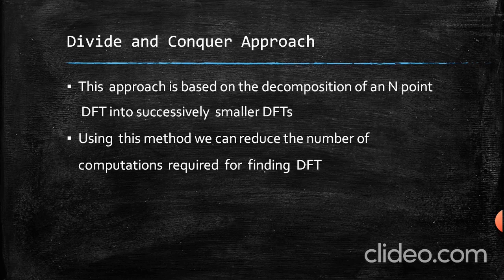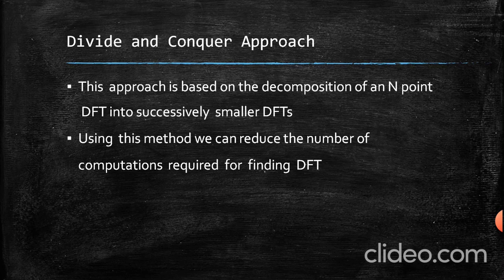For example, if the number of multiplications required for finding the DFT using the coefficient matrix method is around 1000, then using the divide and conquer approach it is less than 1000 — perhaps around 600 or 500, depending on the value of capital N. This is the advantage of the divide and conquer approach.